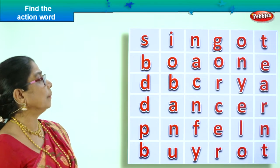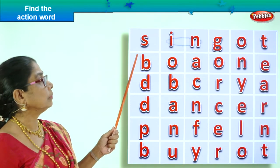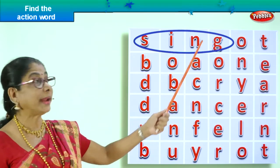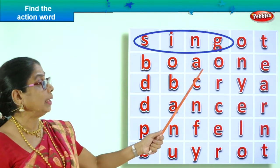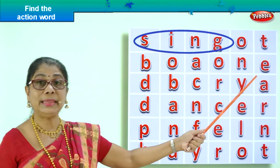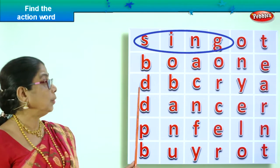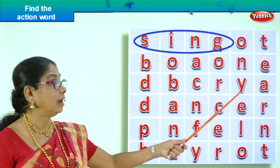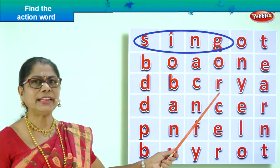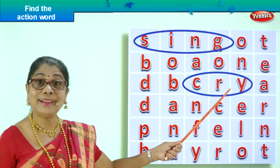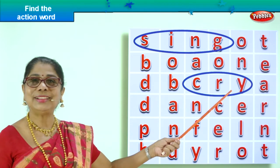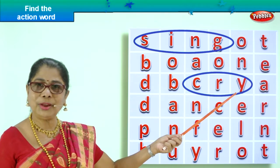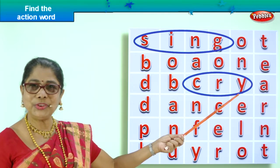Now let's go on to find more action words. B-O-A-O-N-E — any action word? No. D-B-C-R-Y-A — can you find any action word here? C-R-Y, cry. You cry when you want something, you cry when you fall down, you cry when you get hurt. Cry.